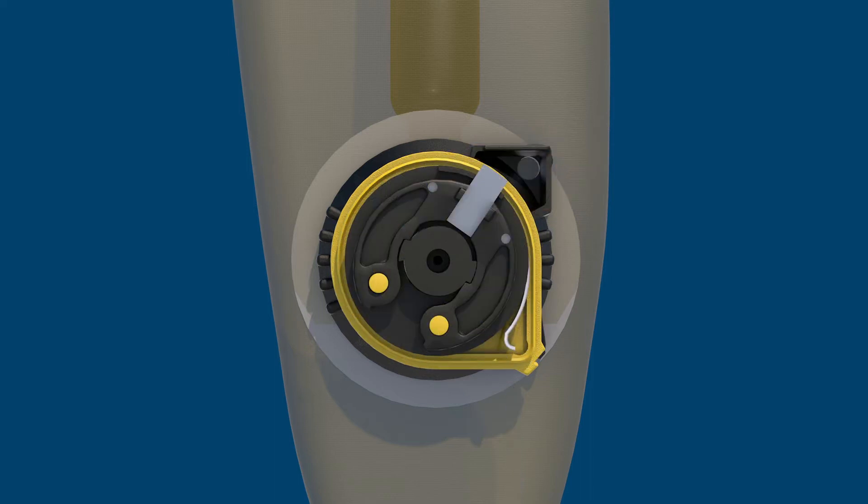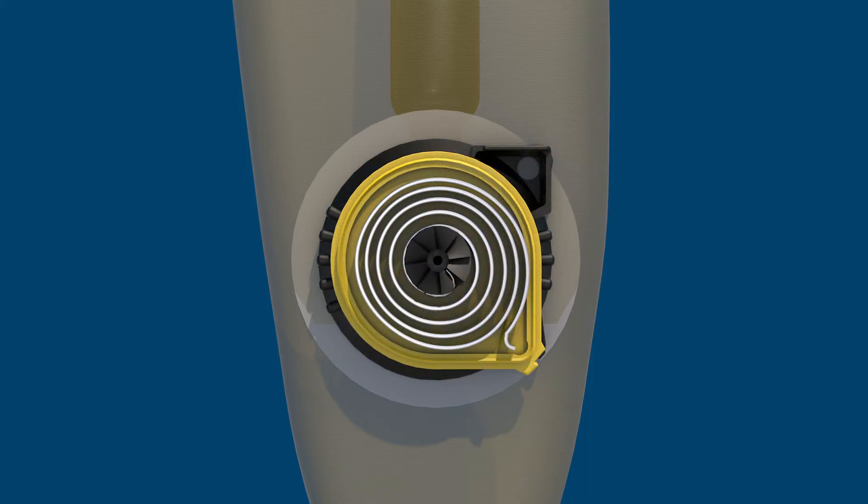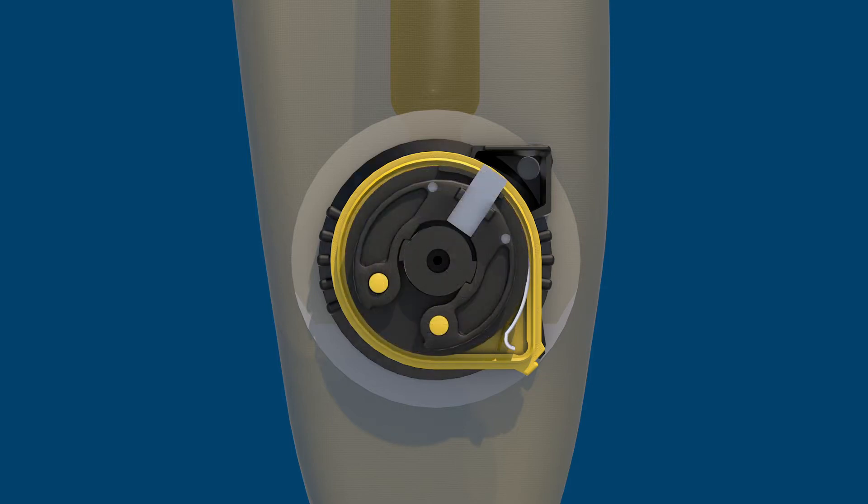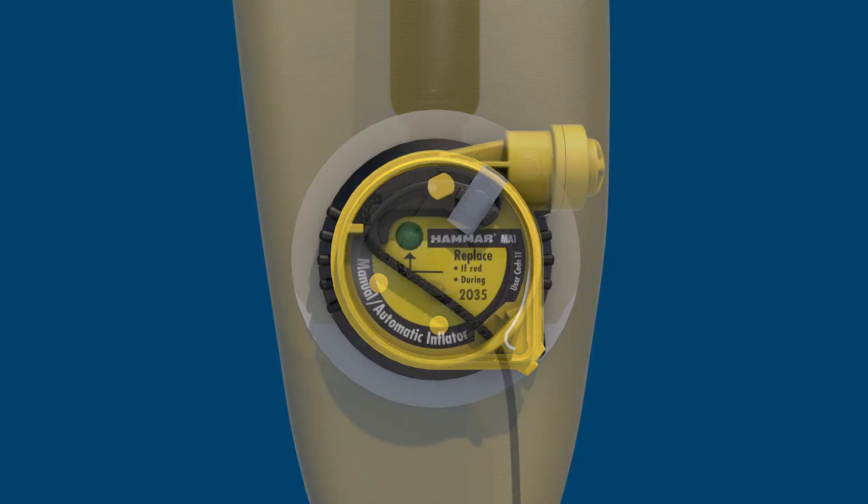Inside the MA1, two arms joined by a paper element hold a coiled mainspring under tension. The paper element is located next to the hydrostatic valve.